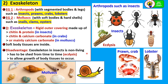A disadvantage of the exoskeleton in insects is that it is non-living and does not grow with the insect. As the insect grows, it must shed the old exoskeleton — as seen here for the dragonfly, where the brown part is the old exoskeleton — and replace it with a newer, larger one. This process is called ecdysis, the shedding of the old exoskeleton to allow growth, and will be studied further in chapter 15.